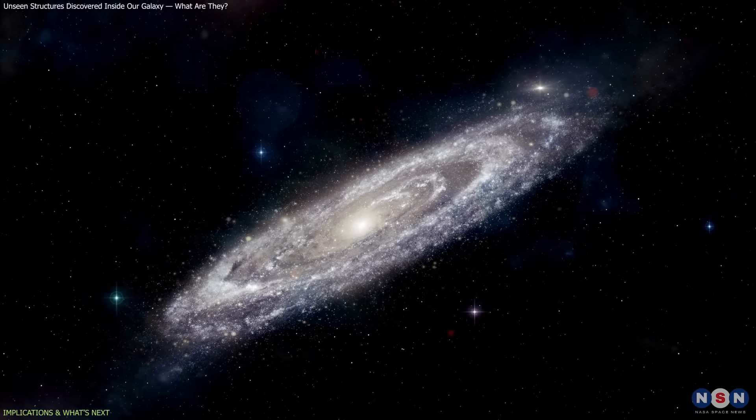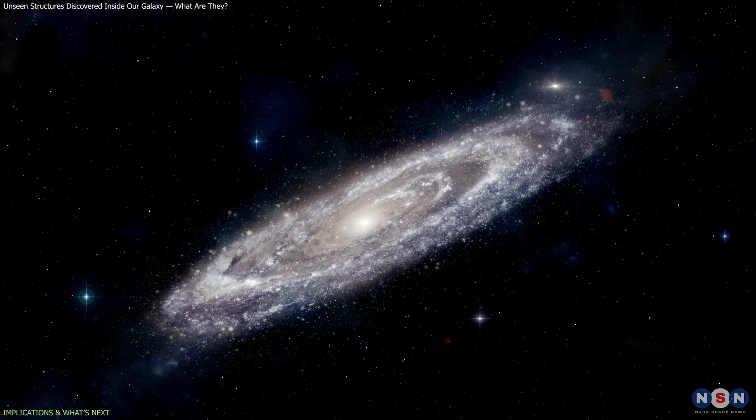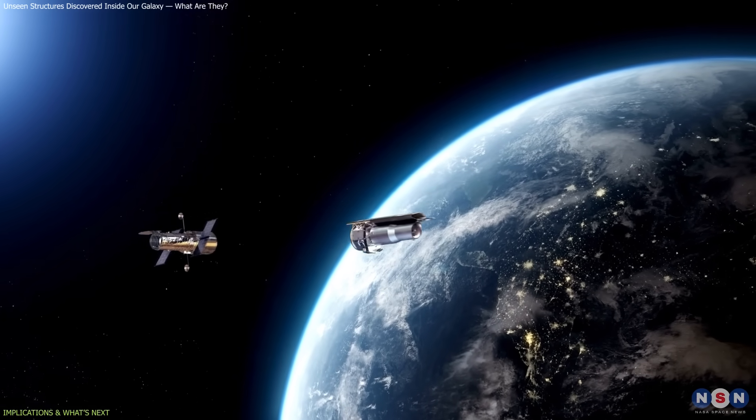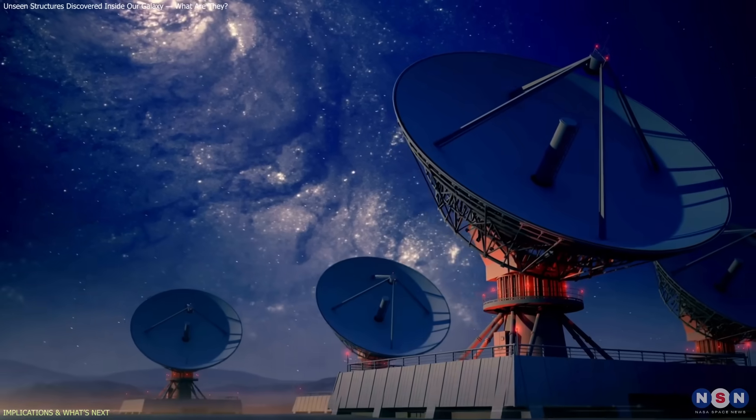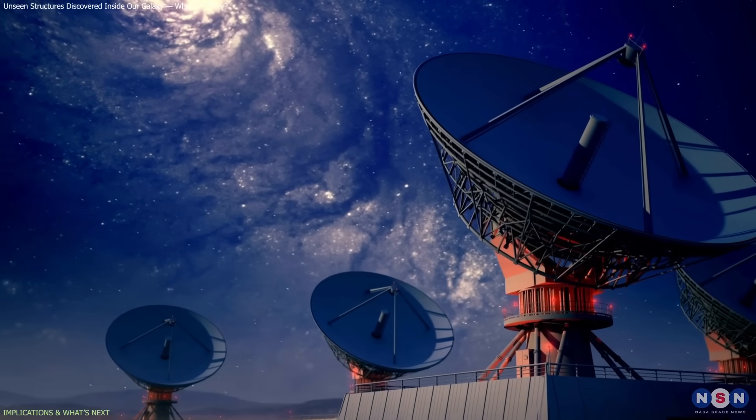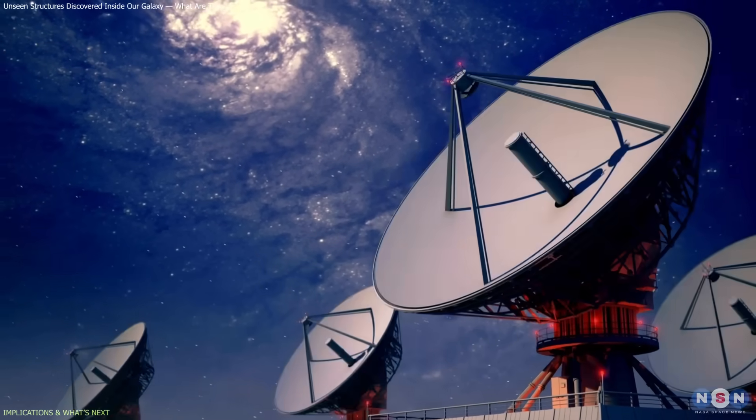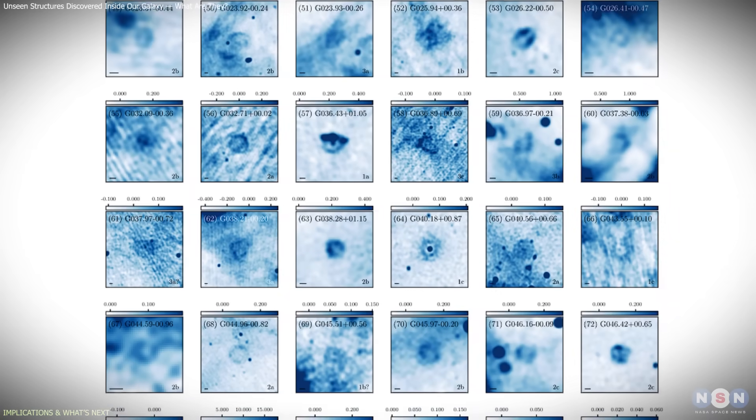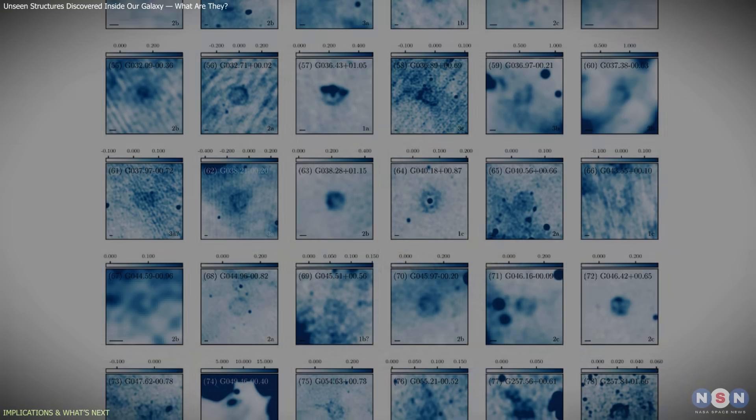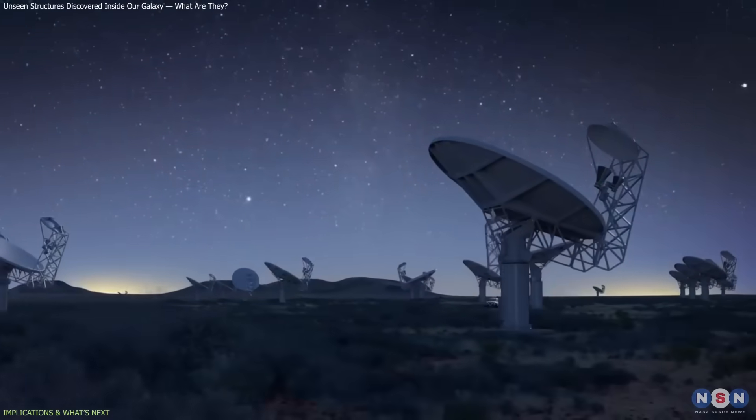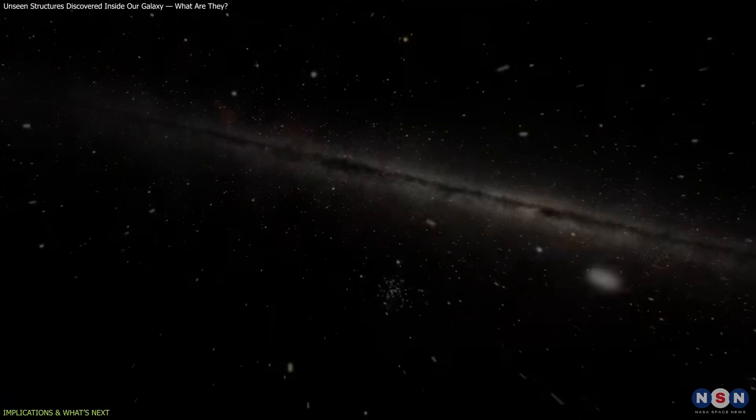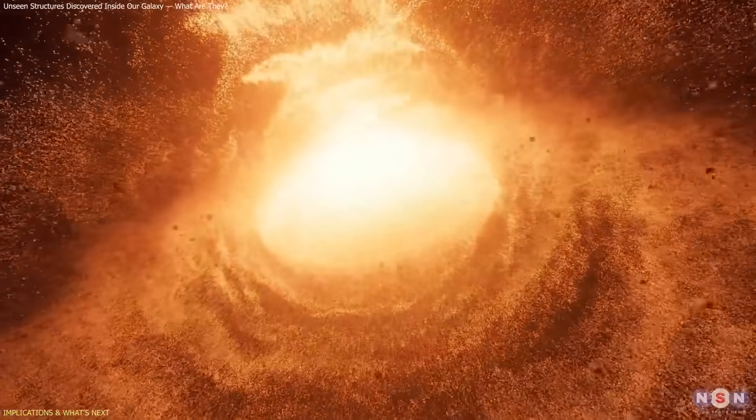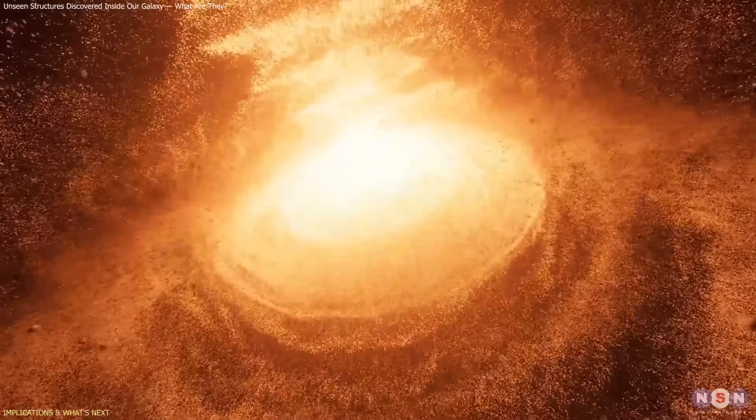This discovery has wide implications for how astronomers study the Milky Way. For years, our view of the galaxy has been shaped by optical and infrared observations. Now, radio astronomy is revealing structures those methods simply can't see. First, these rings increase the known count of stellar remnants and shells. Finding more than 160 in one survey suggests thousands may be scattered throughout the galaxy. This affects how we model the number and frequency of late-stage stellar events, such as mass loss, nova eruptions, or supernovae.